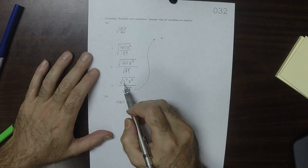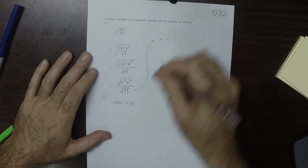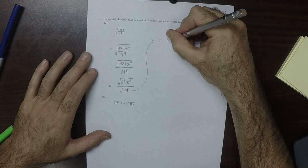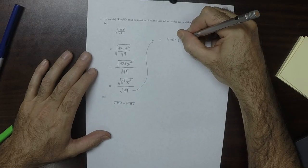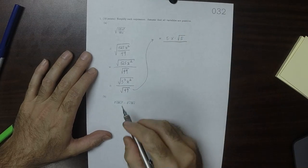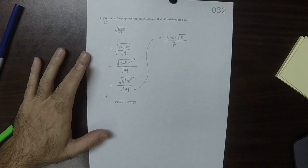So a pair of 5's can come out as a 5, and a pair of x's can come out as an x, and then there's one 5 left in the numerator, and then the square root of 49 is 7, so that's the answer.